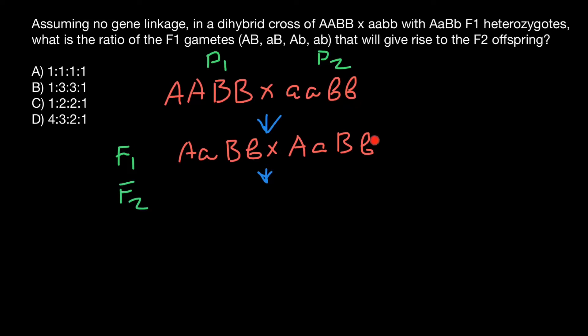Unlike F1 generation, which is going to be genetically uniform, in F2 generation we are going to get segregation of traits and many different genotypes.